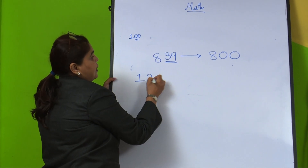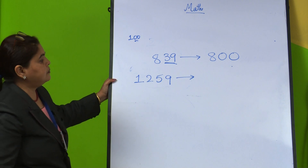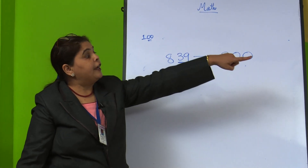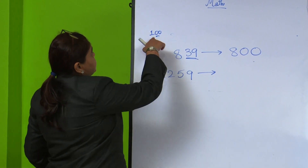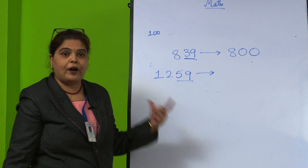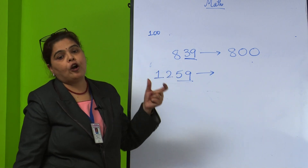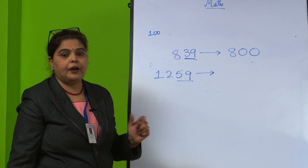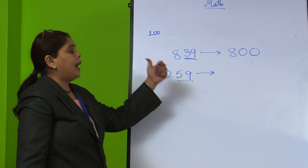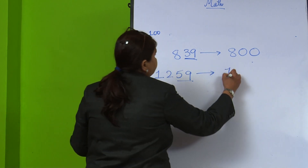For the 4-digit number, again the question is nearest to 100. We underline the last 2 digits and check if they are more than 50 or less than 50. They are more than 50, so we add 1 to the hundreds digit and write zeros. The answer is 1300.